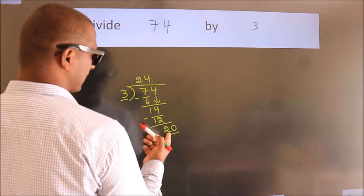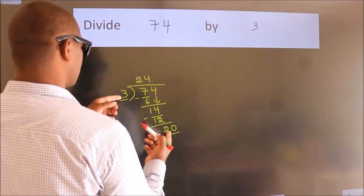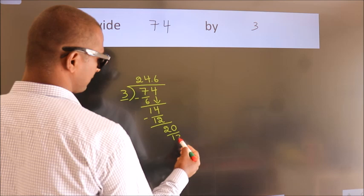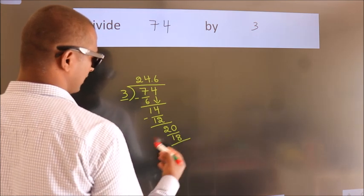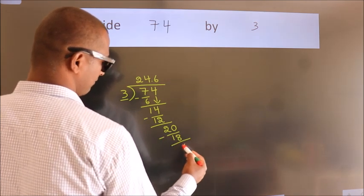A number close to 20 in 3 table is 3, 6, 18. Now, we subtract. We get 2.